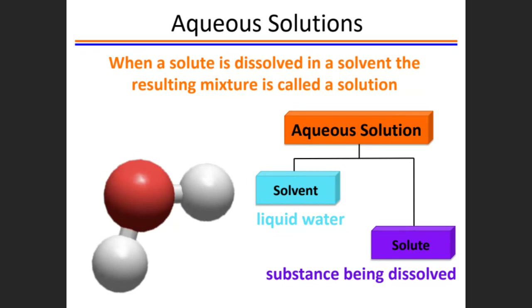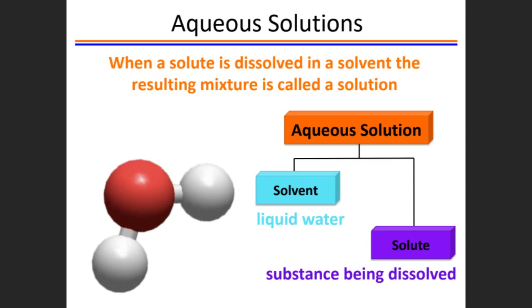In the first lecture, we talked a little bit about homogeneous and heterogeneous mixtures. If a solute is dissolving in a solvent, that is a homogeneous kind of solution. When it is not mixing, that is heterogeneous. Like sugar or salt in water is homogeneous — an example of a solution.